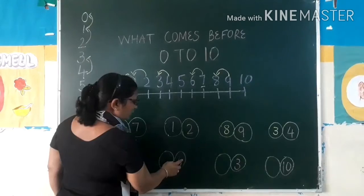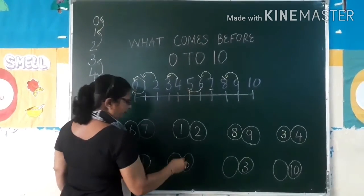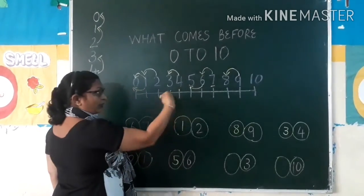And what is before six? Six yahan. Six yahan. Aur six ke before kya number hai hamara? Five. Peeche ko dekh na hai. Yahan bhi hamara hai.